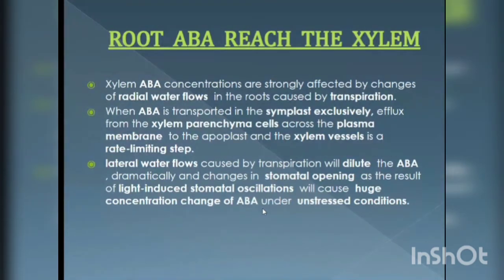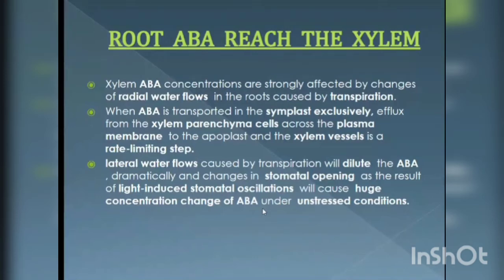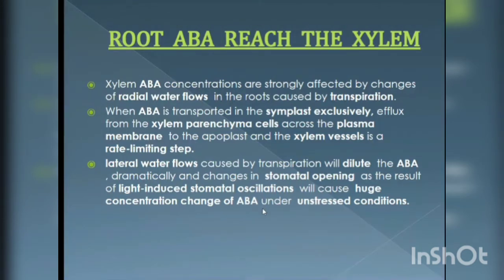Root abscisic acid reaches the xylem. Xylem ABA concentrations are strongly affected by changes of radial water flow in the root caused by transpiration. When ABA is transported in the xylem, the efflux exclusively from the xylem parenchyma cell across the plasma membrane to the apoplast and the xylem vessel is a rate-limiting step. Lateral water flow caused by transpiration will dilute the ABA dramatically, and changes in stomatal opening as a result of light-induced stomatal oscillation will cause a huge concentration change of ABA.